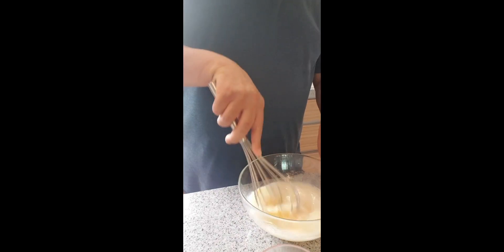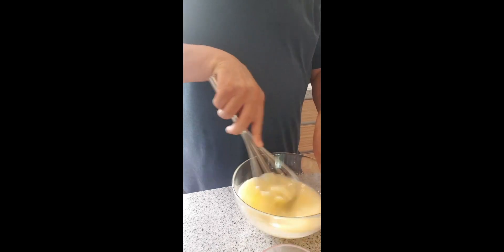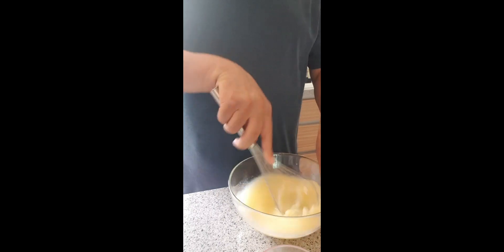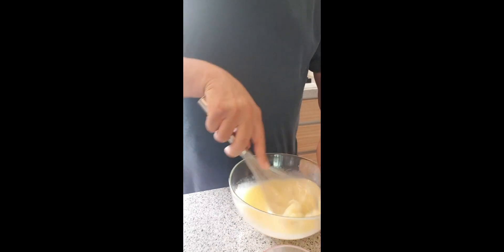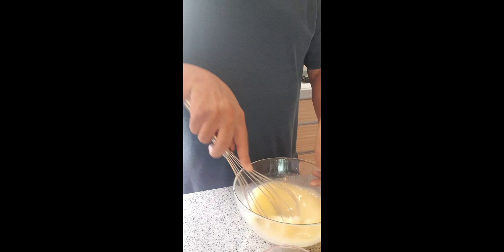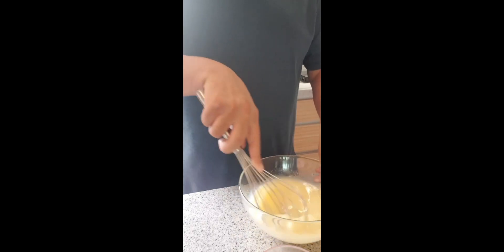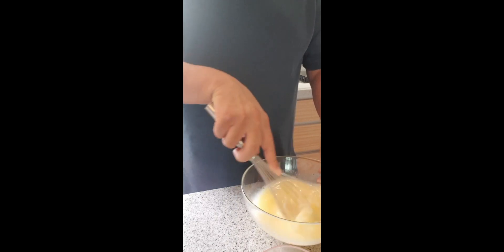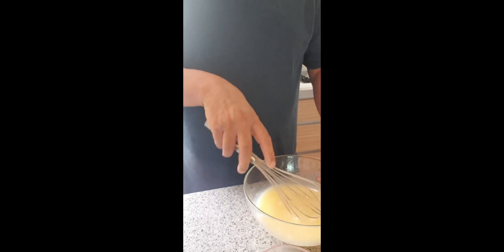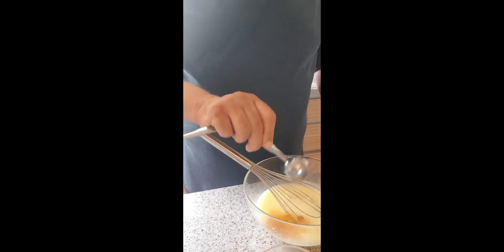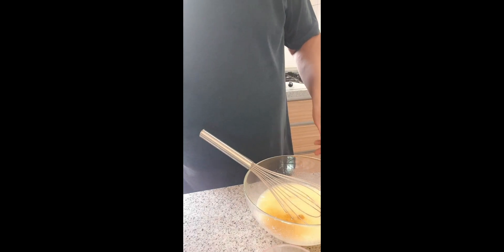We're going to whisk it. And we got one and a half teaspoon of vanilla extract. So we'll add that. Those are all part of the wet ingredients.